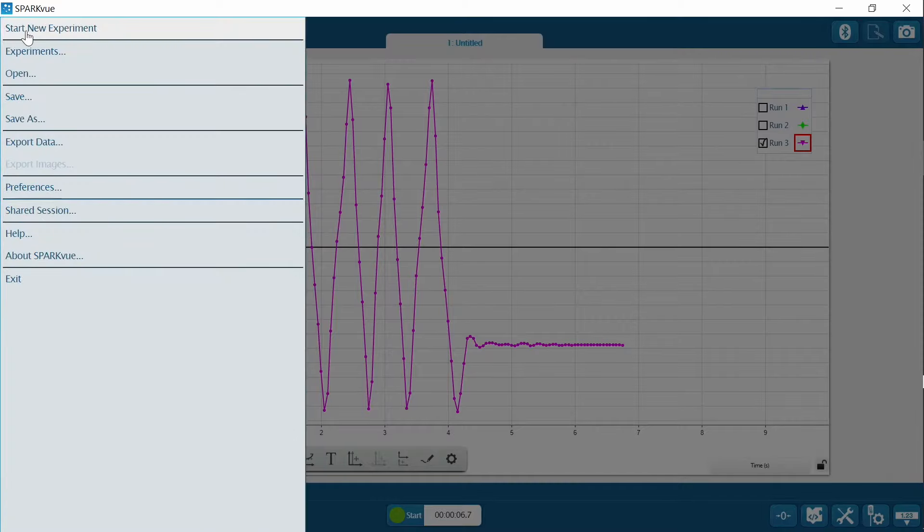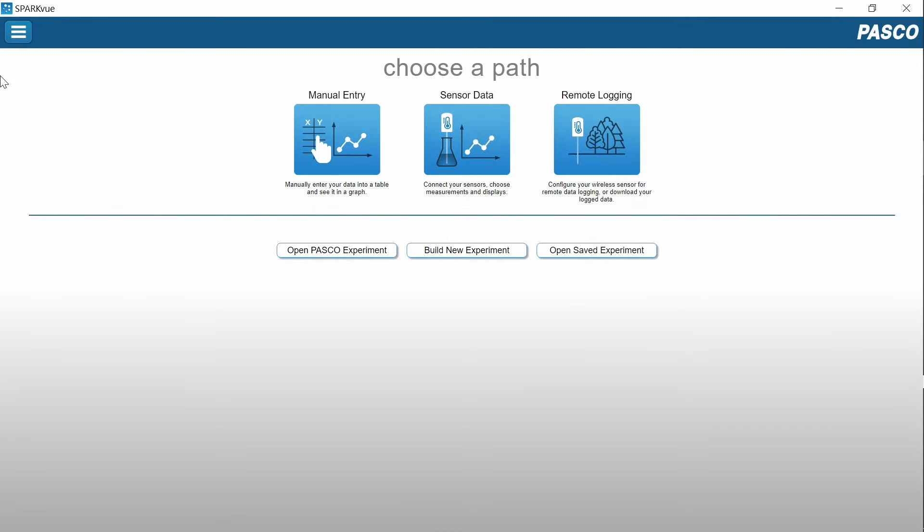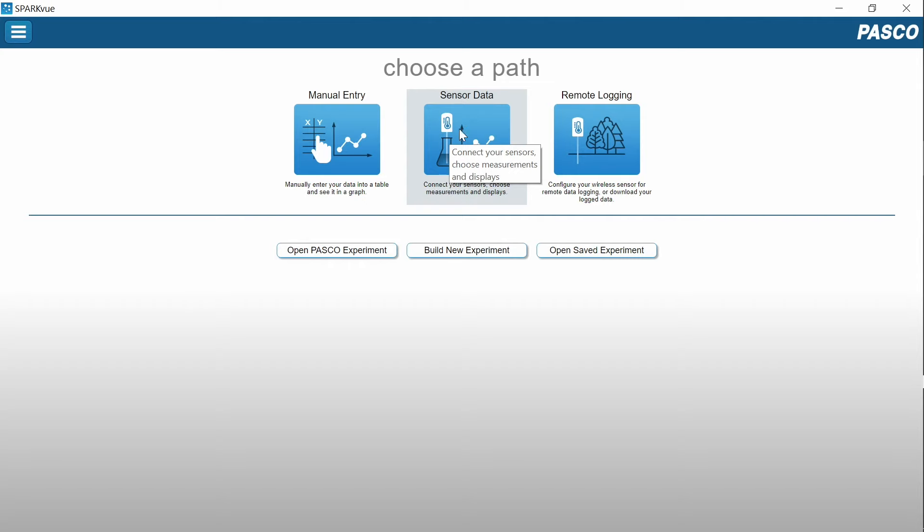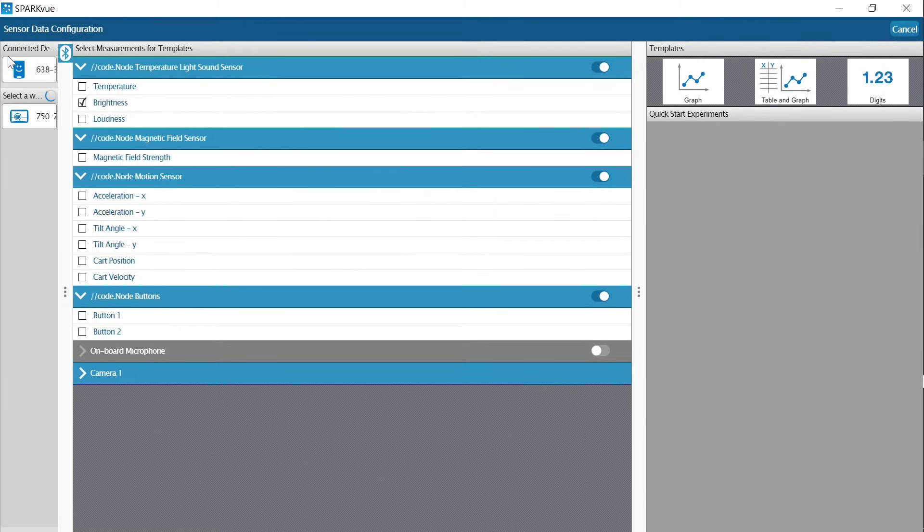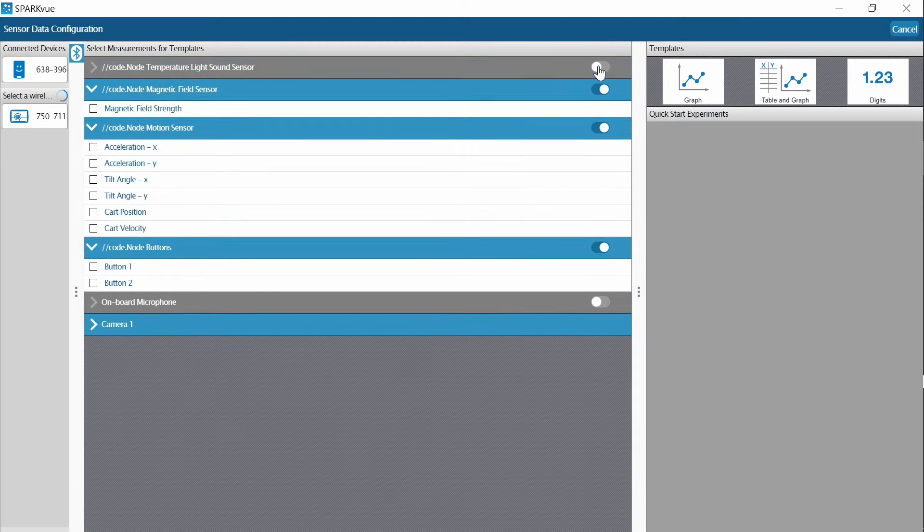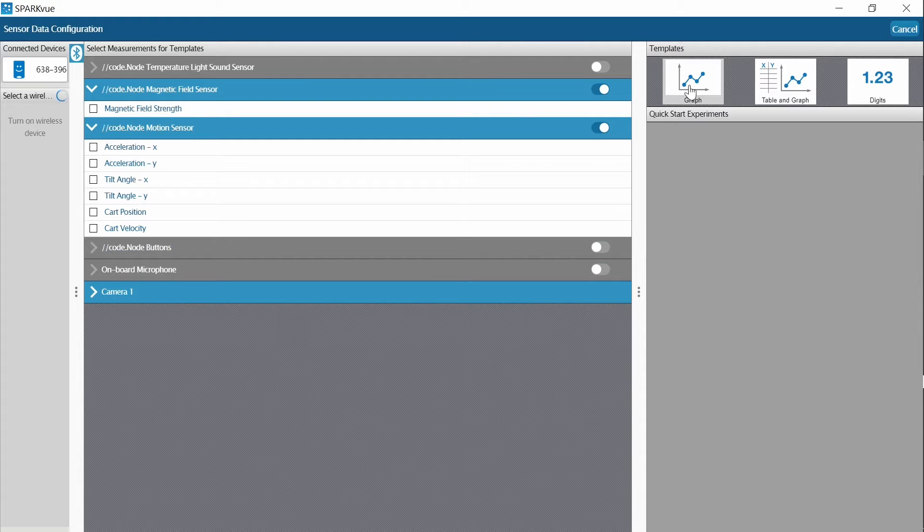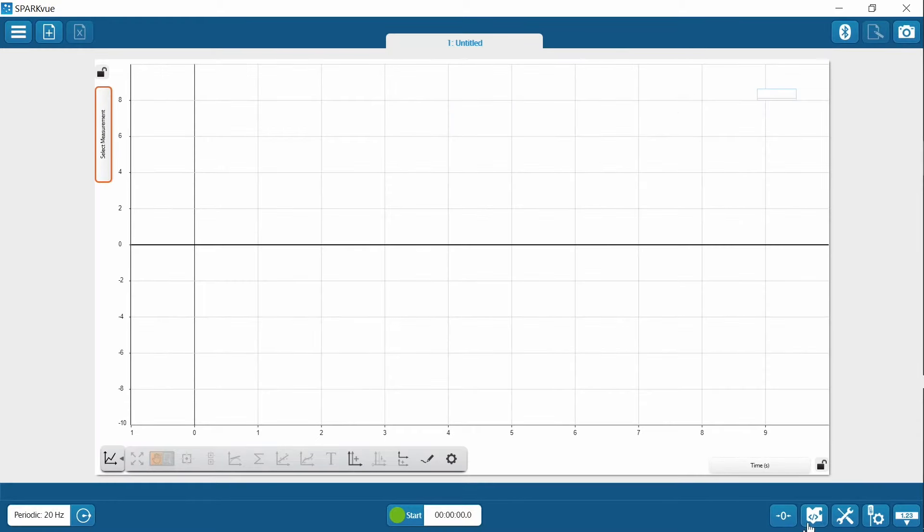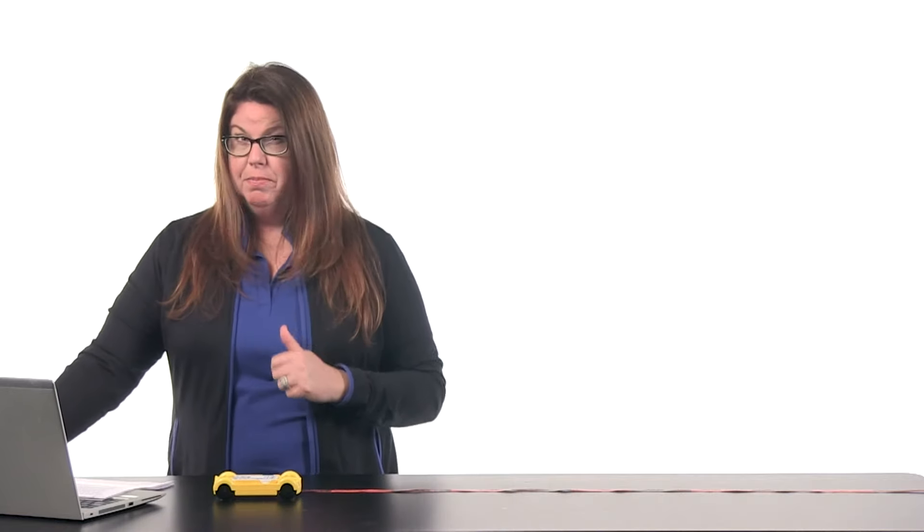So let's get going. I'm going to start a new experiment because I need a couple extra measurements to get my program to work here. I'm referring to the student sheet that you have as well to do this. It's a more advanced program because you're going to actually be creating a mathematical function. I'm going to choose sensor data. My code node is already attached. I'm going to disable temperature, light and sound. You don't need those. I'm going to leave magnetic strength. And then I'm also going to want cart position. So I'm going to leave this and disengage the buttons and go to the graph.